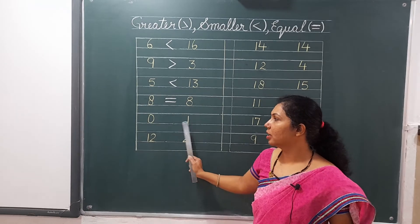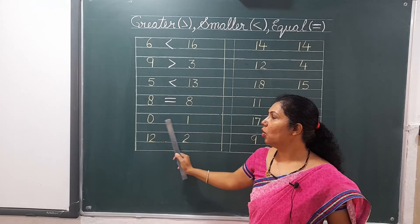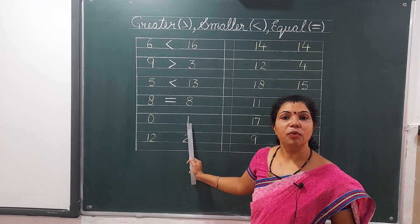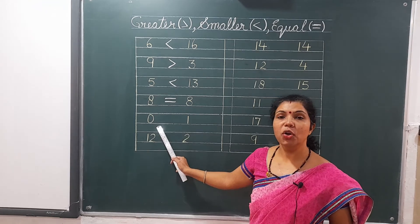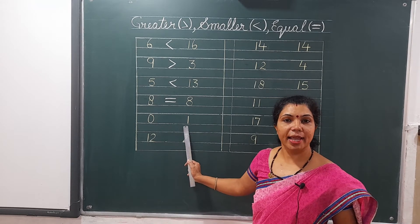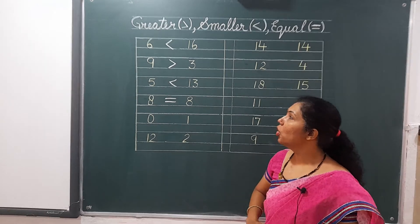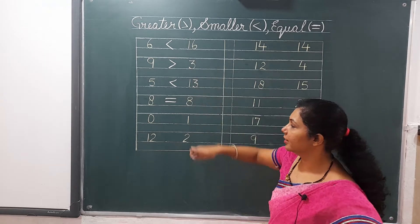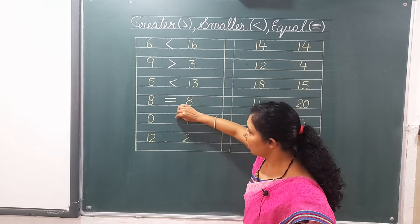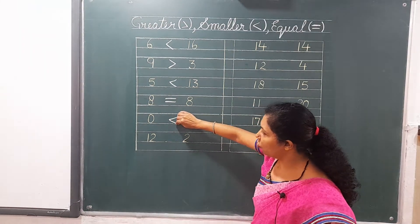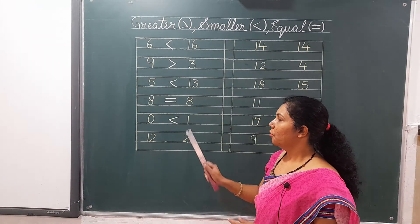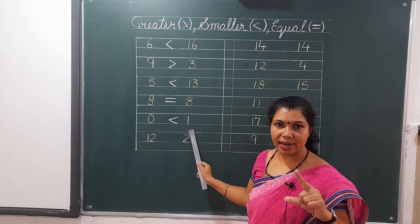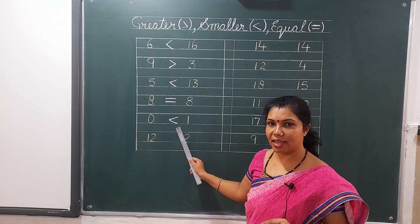Zero and one. One comes after zero, so one is greater than zero. We will put the greater sign, and the mouth will be open towards one.